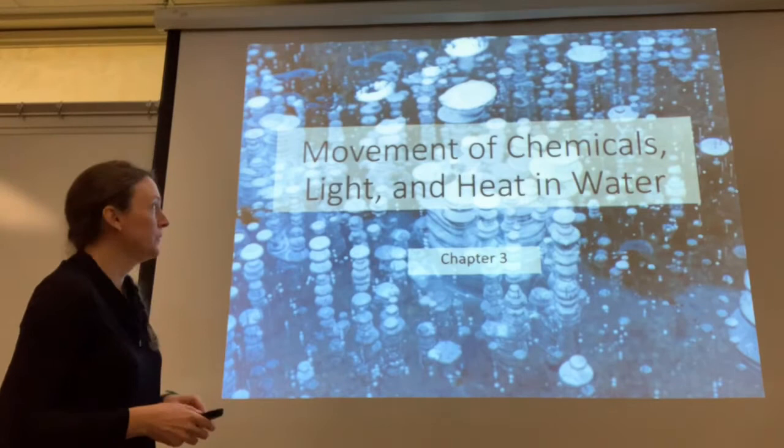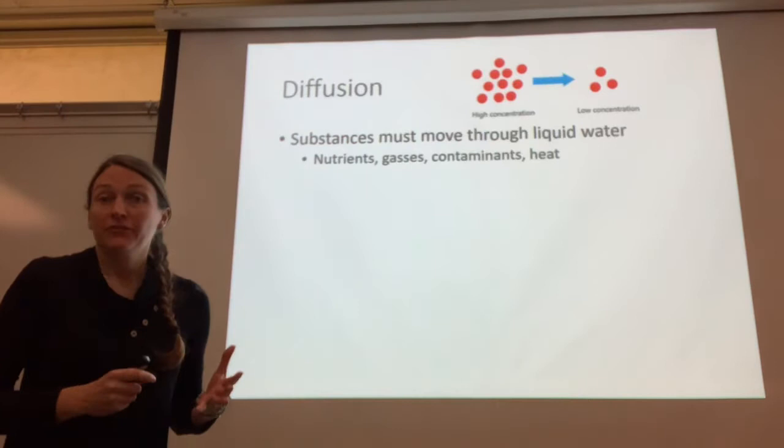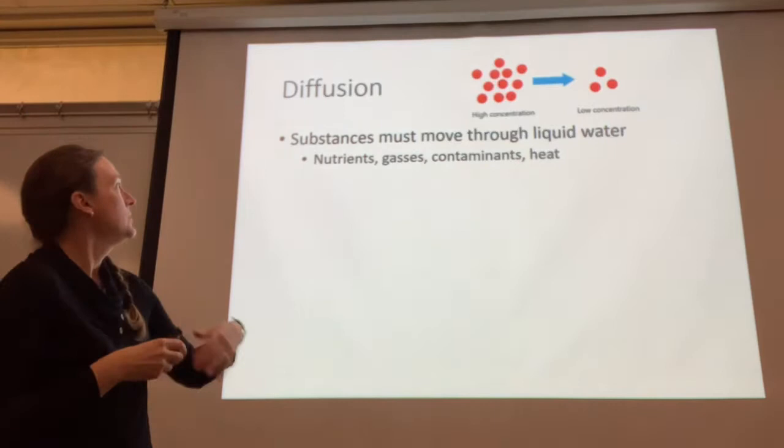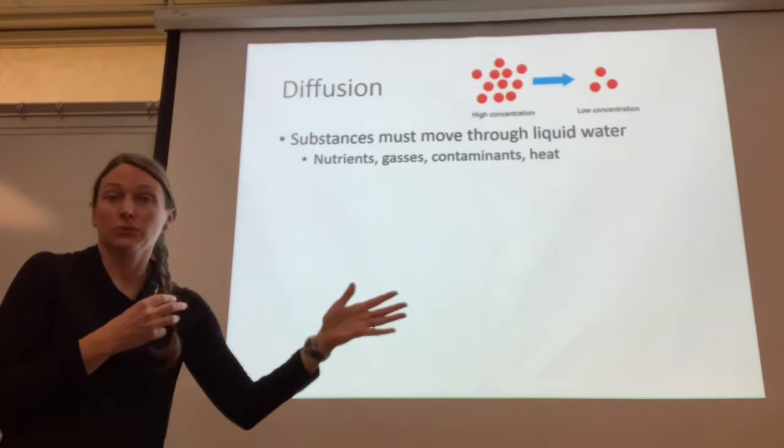Moving on to chapter three, we're going to talk about the movement of chemicals, light and heat and water. First we're going to talk about diffusion. Diffusion is the movement from high concentration to low concentration. Substances like nutrients, gases, contaminants and heat will all diffuse through a liquid like water.